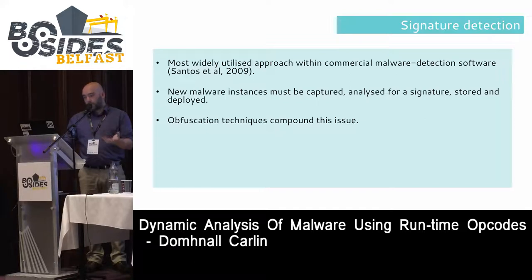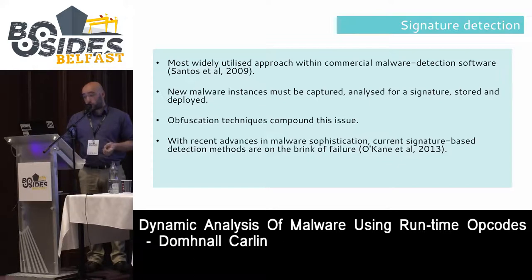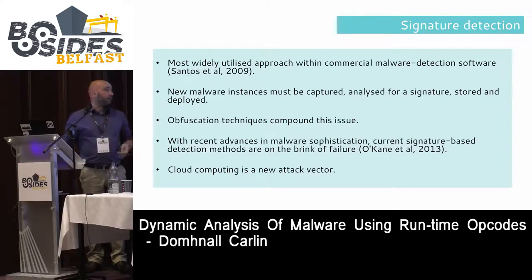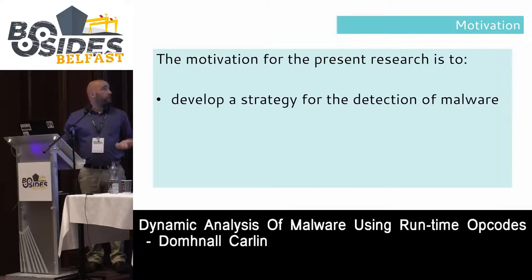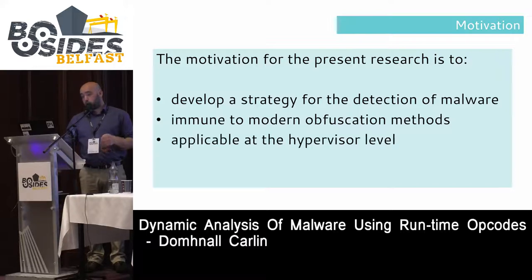Standard obfuscation techniques such as polymorphism can worsen this problem. With recent advances in malware sophistication, some researchers have shown that signature-based detection methods are on the brink of failure. With the advent of cloud computing and cloud storage, that's just another attack vector. So the motivation of the research is to develop a strategy for detection of malware that's immune to modern obfuscation methods and applicable at a hypervisor level.